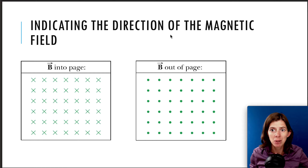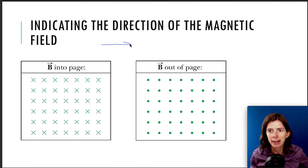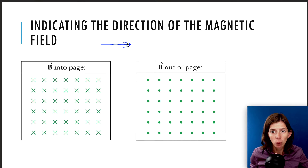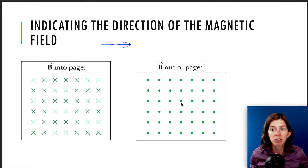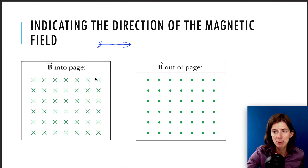The way that I remember this is I think of an arrow — like you're shooting a bow and arrow. So if the tip of the arrow is coming towards you, out of the page, then you see a dot. But if the arrow is going into the page, then you just see the cross from the back. Just a way to perhaps remember it.